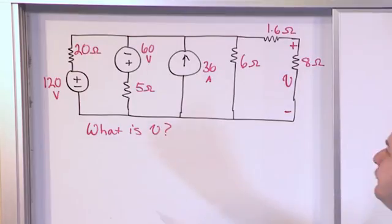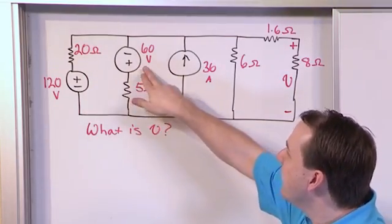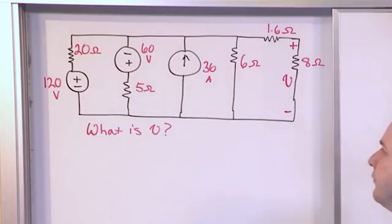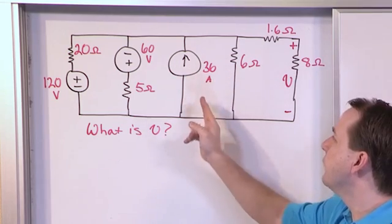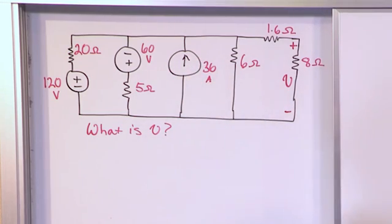So you can see it's a little complicated. We have two voltage sources and one of them is actually flipped upside down. We have a constant current source going up and resistors everywhere, and we're trying to find the voltage here.